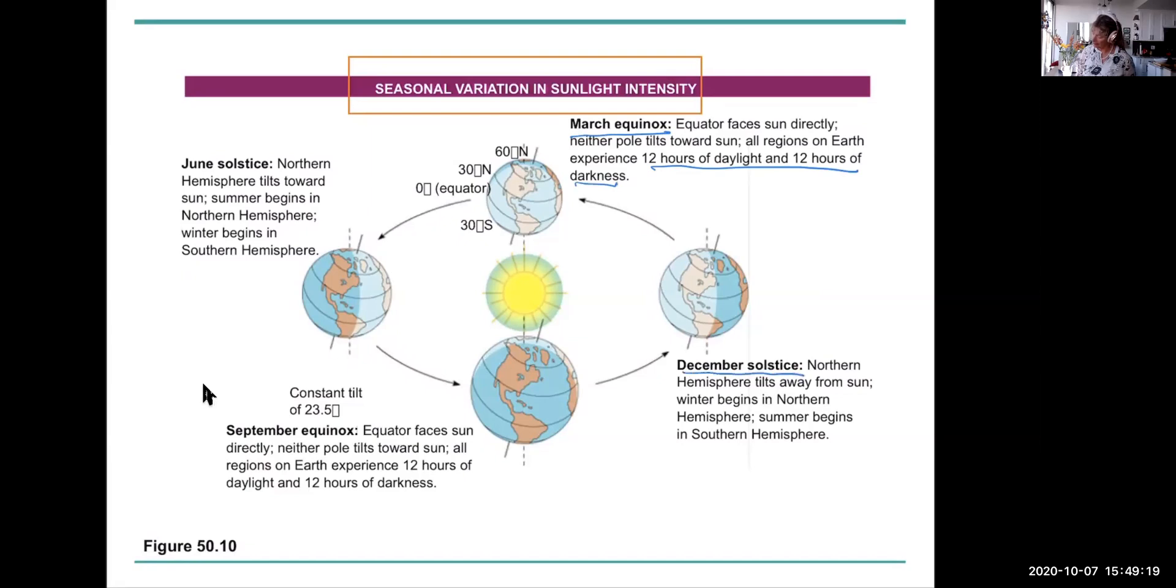In December, what happens here in December, which is longer, the nighttime or the daytime in December? The nighttime, yeah. So in the northern hemisphere, we tilt away from the sun, so our winter begins, but also our period of darkness gets longer.